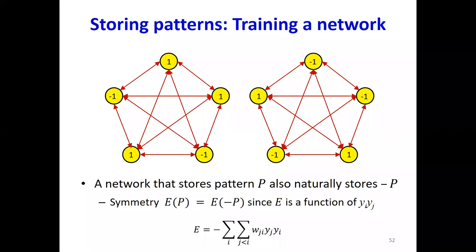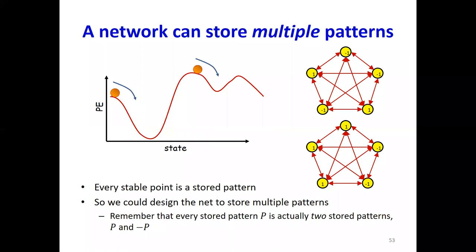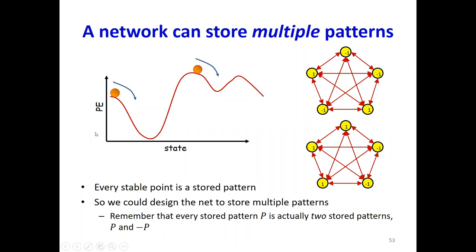Things to remember: a network that stores one pattern also stores its negation. If the network stores minus 1, 1, 1, 1, minus 1, 1, it's also going to store 1, minus 1, minus 1, 1, minus 1. Any network that stores a pattern p also naturally stores minus p, because the energy of a pattern is the same as the energy of the negation of the pattern. Also, because the energy contour can have multiple local minima, the network can be designed to store multiple patterns — but each pattern is stored as two patterns.